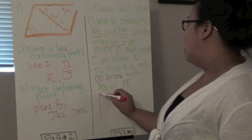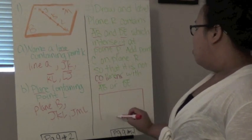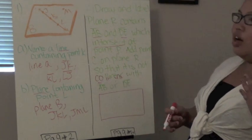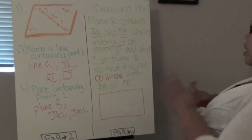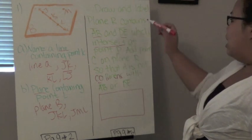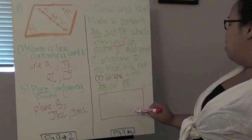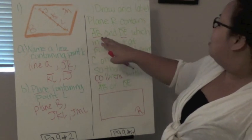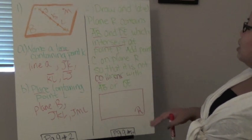So it says draw and label plane R. Draw and label. Plane R contains A, B, and D, E. So we're going to draw plane R. Now, plane R can be any shape. Rectangle just seems to be the favorite of the book, but you can draw a triangle, you can draw a star, whatever it may be, but it's a plane, it's a flat 2D surface, and it is plane R. So since it's one letter, we're going to assume that it is cursive. So then we have A, B, and D, E. Lines A, B, and D, E.